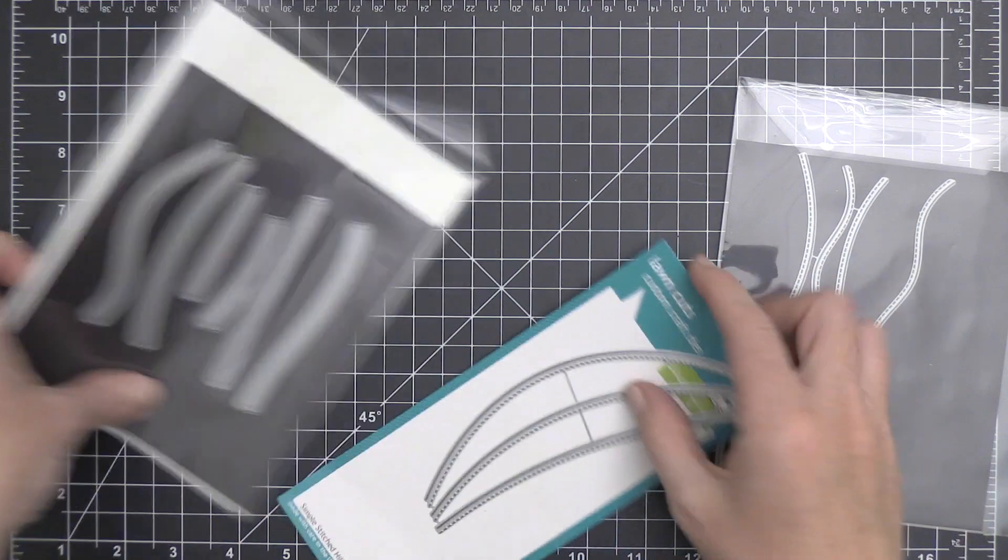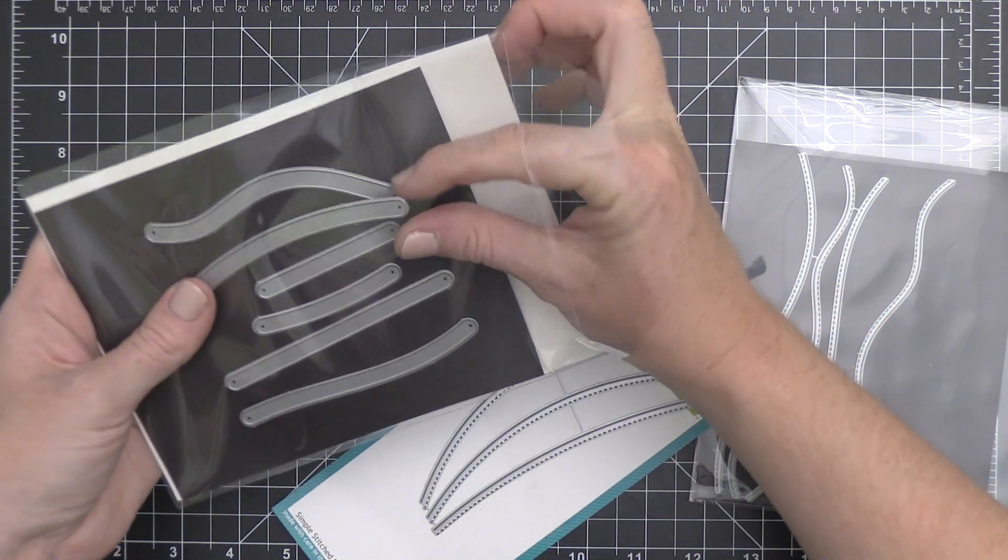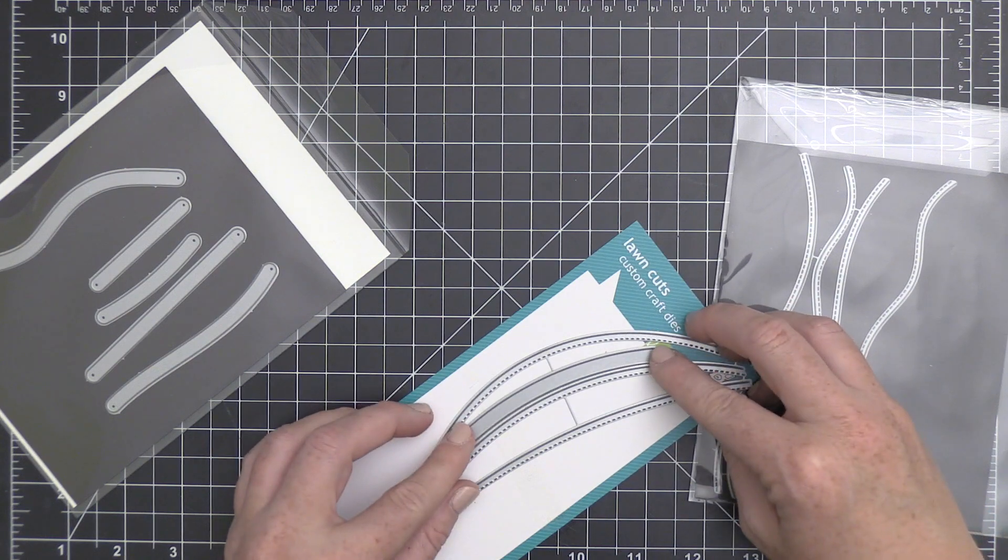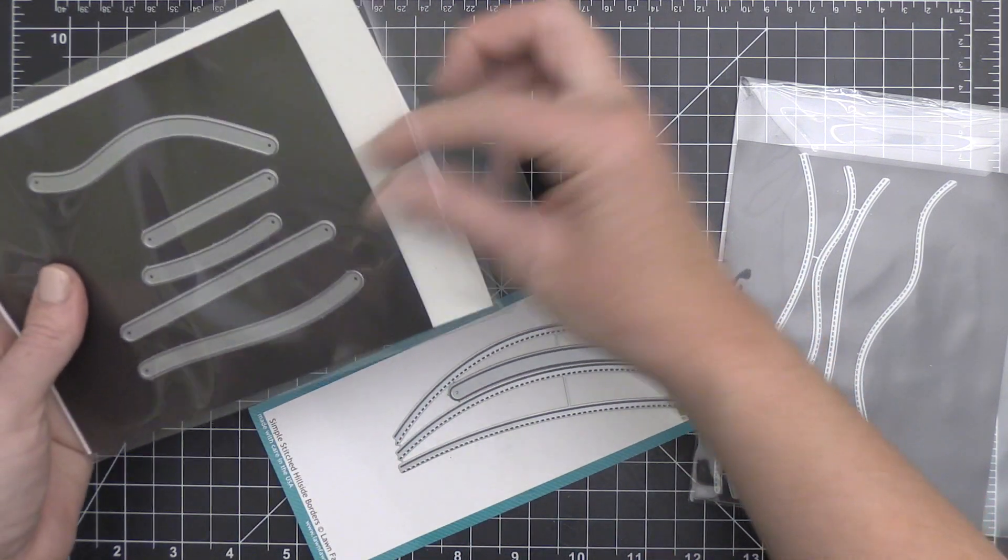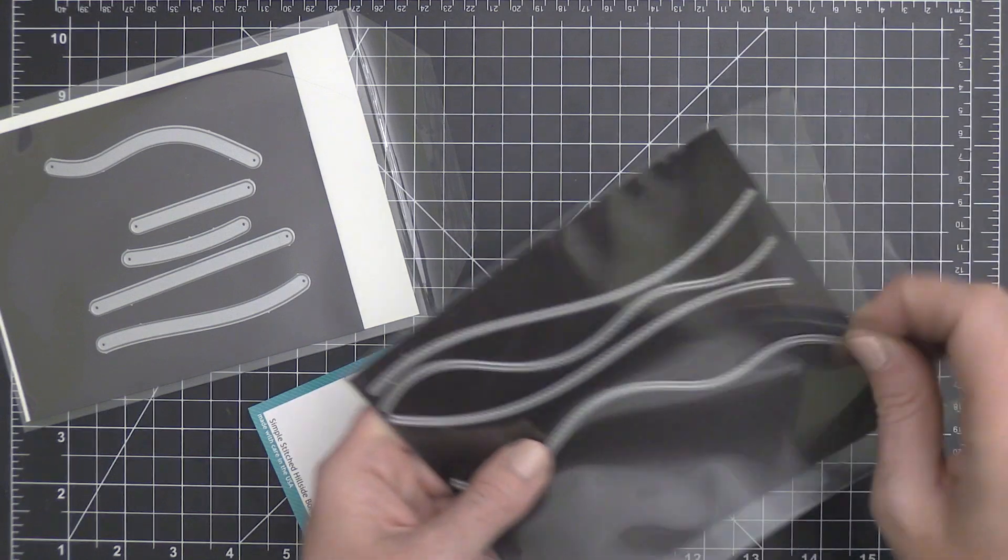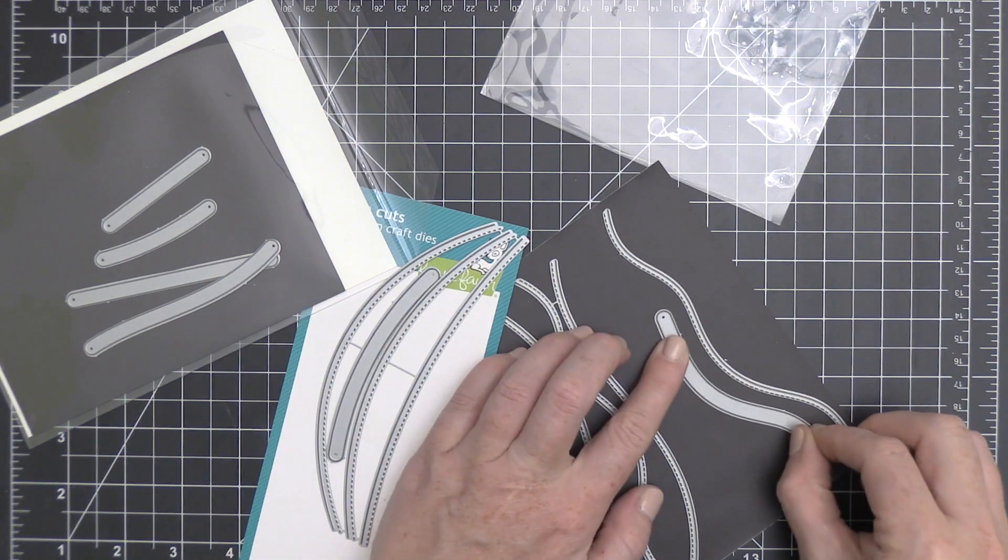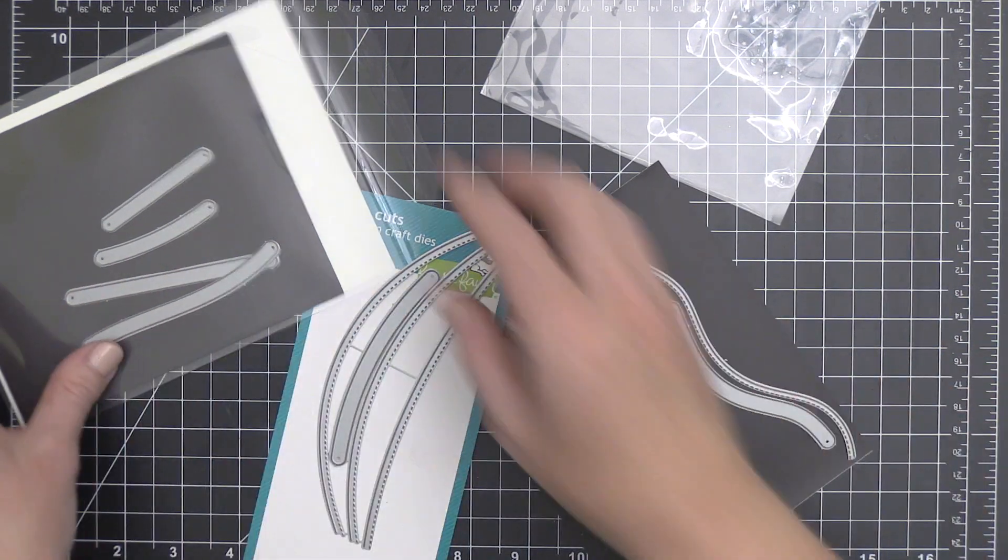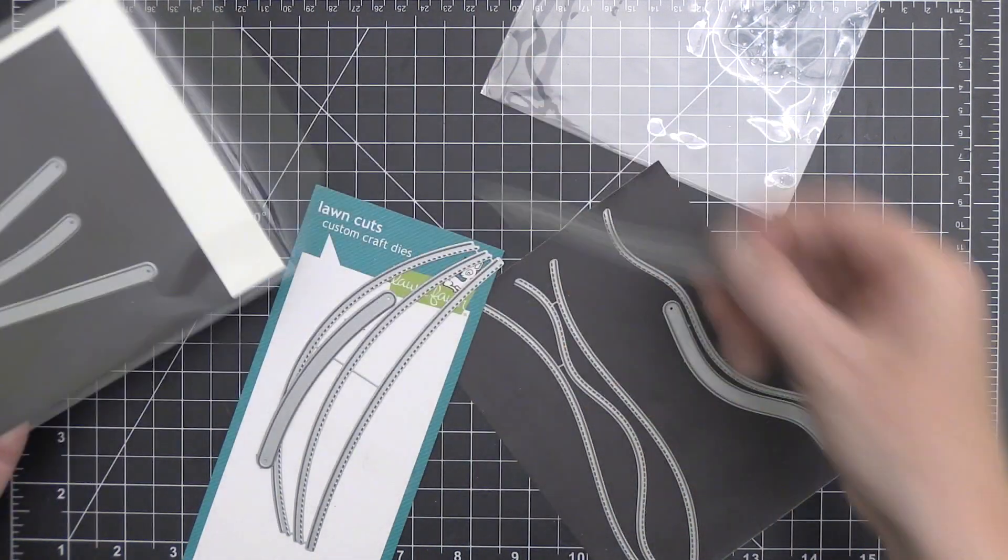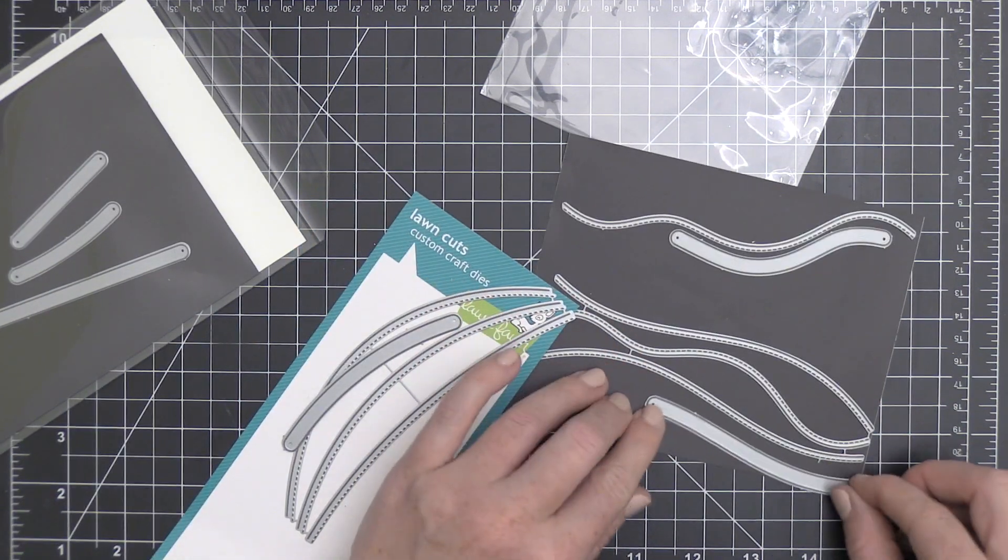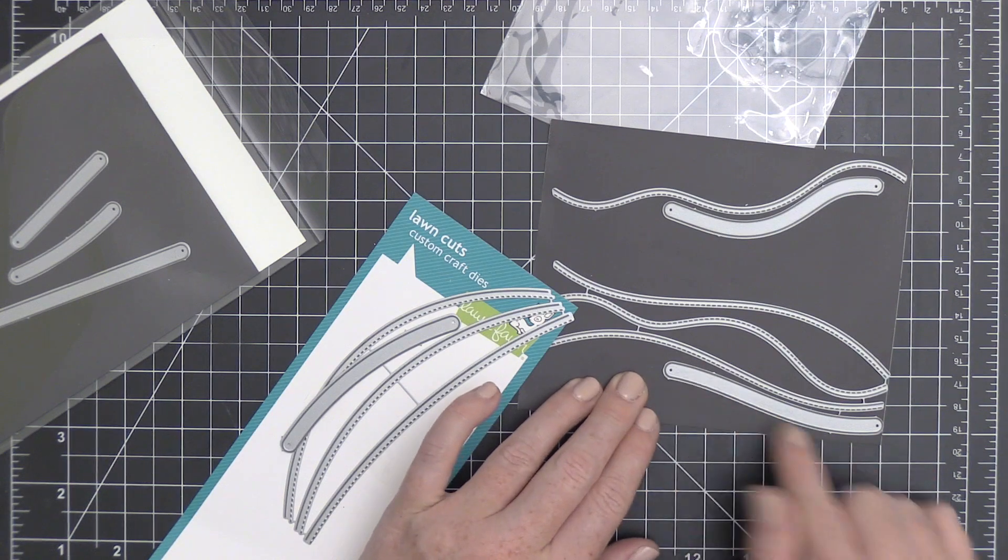Part of the reason that I love these dies so much is that they've created them to coordinate with the stitched hillside dies that Lawn Fawn already has. So I love dies that you can use on their own but also coordinate with other things as well. I'm showing you here that a few of these just line up perfectly with these hillside border dies that Lawn Fawn released several maybe years ago.